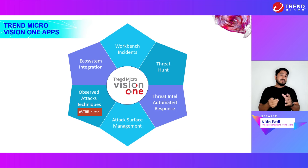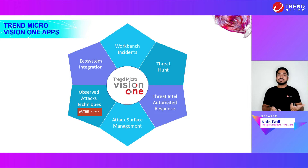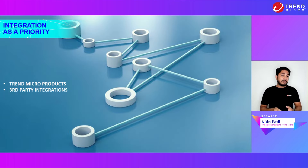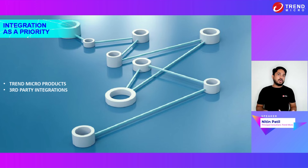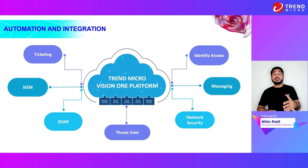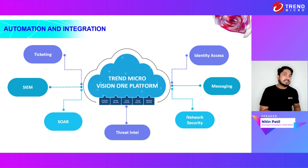If you look at Trend Micro Vision One, which is the core capability of the entire platform, it has various apps like Workbench Incident, Threat Intel, Response Management, Threat Hunting App, and Automation and Integration. This is where we will focus on every app and showcase its value in 10 minutes through a live demo. The platform cannot create silos — it has to be integrated. We ensure that Trend Micro products as well as third-party products are integrated. It doesn't matter what tool you're using — it can be SIEM, Identity Access, messaging, or a Threat Intel platform. We have all the use cases ready, and with connectors and APIs, we integrate with your ecosystem.